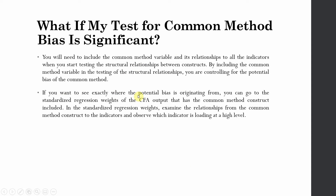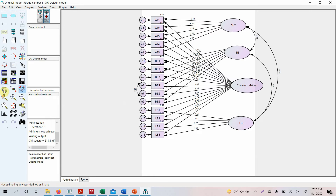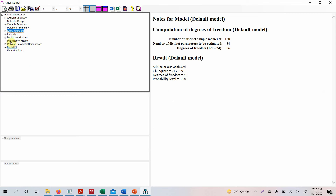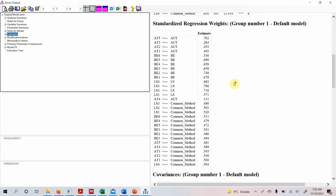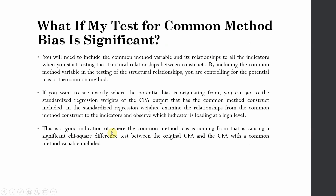If you want to see where the potential bias is originating from, go to the standardized regression weights in the CFA output that includes the common method construct. Examine the relationships from the common method construct to the indicators and observe which indicator is loading at a higher level. Since we constrained the paths, all unstandardized regression weights are equal, but the standardized weights can reveal which indicators are most affected — a good indication of where the common method bias is coming from.